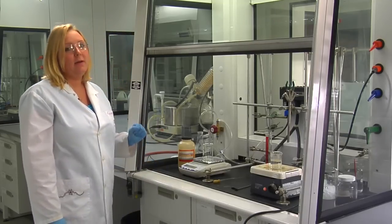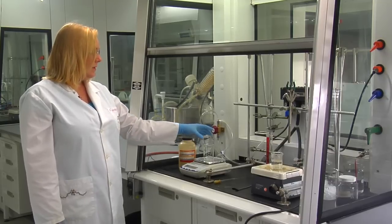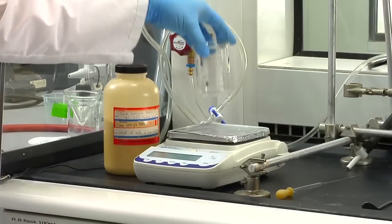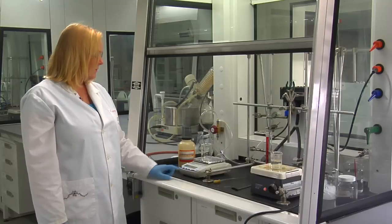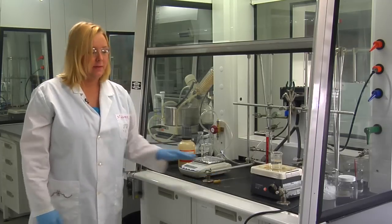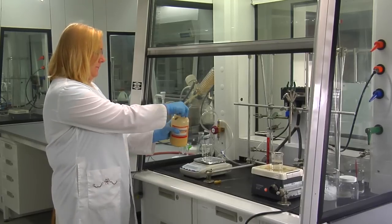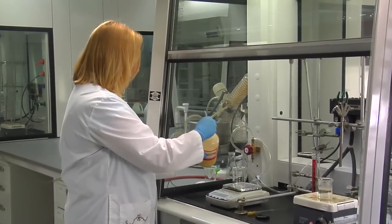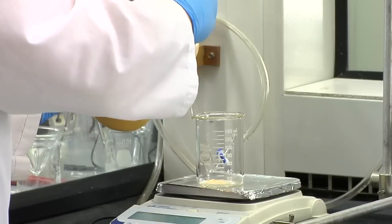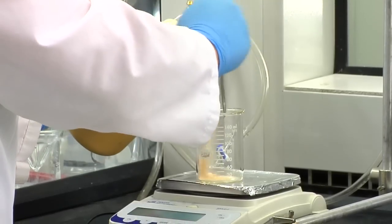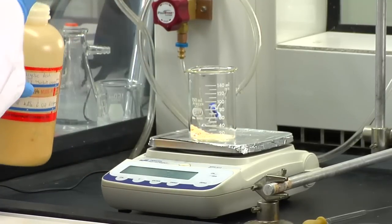Once you have that set up, we're going to weigh out our salicylic acid containing the colored impurity. Using your balance, you're going to get a beaker and place it on the balance, and we're going to zero the reading. Once it displays zero, we can then weigh out approximately one gram of our salicylic acid. You want to make sure that you don't get any of the salicylic acid around the balance, otherwise your reading will be inaccurate.